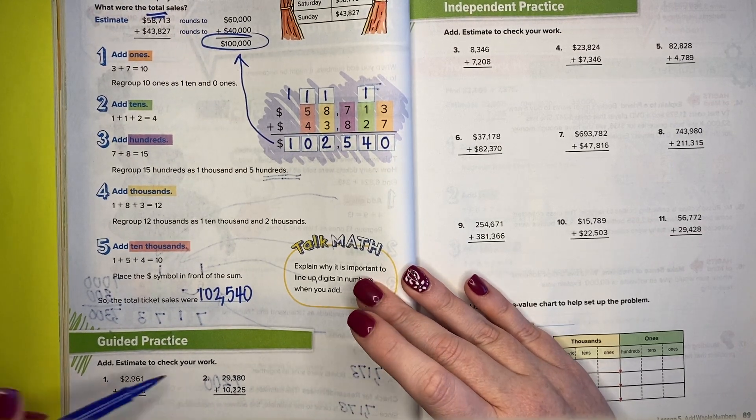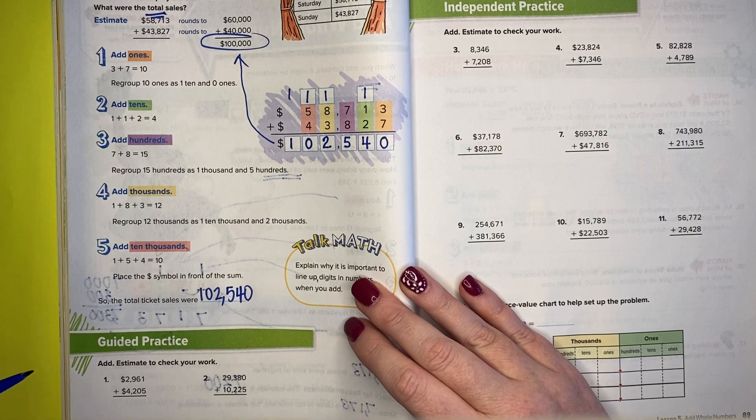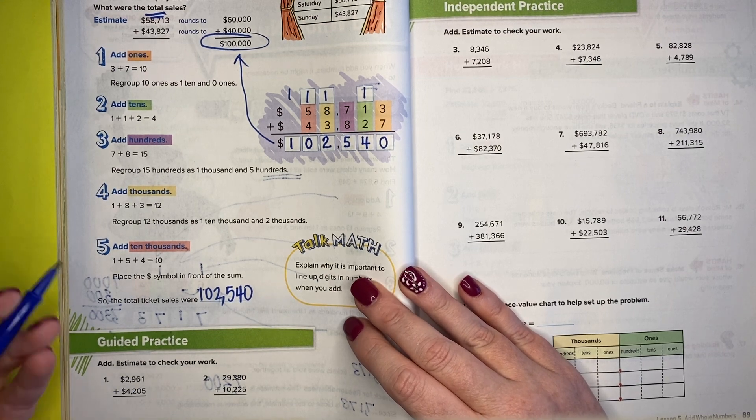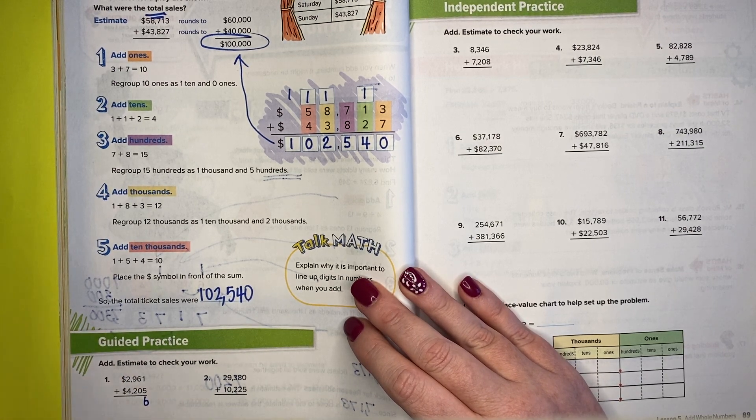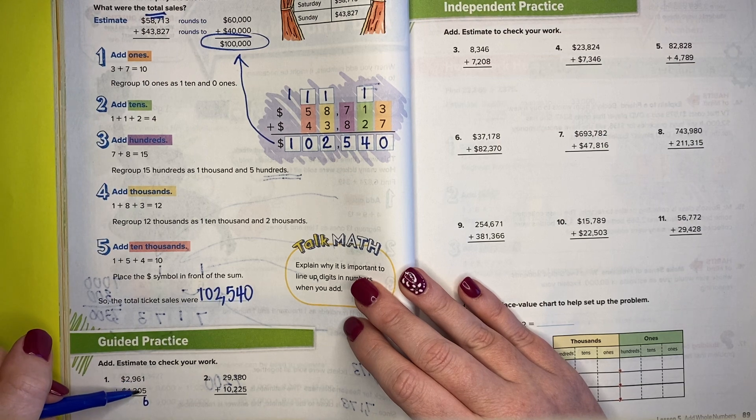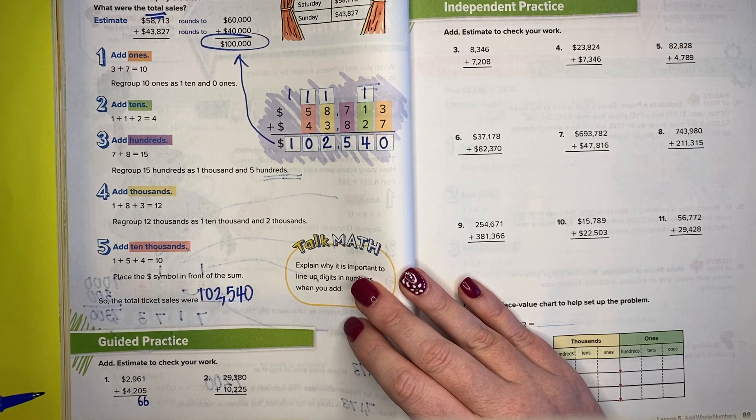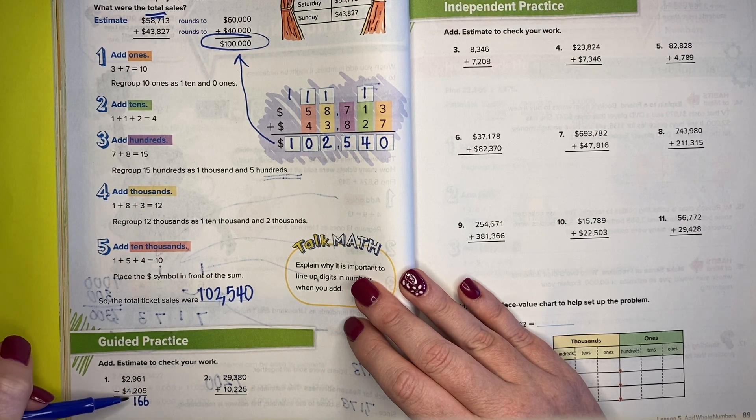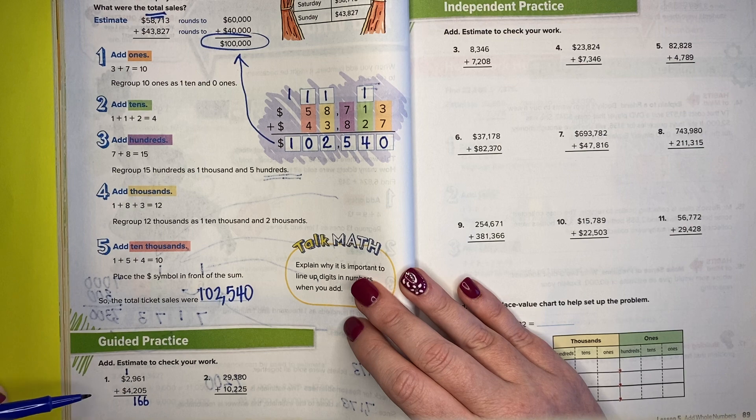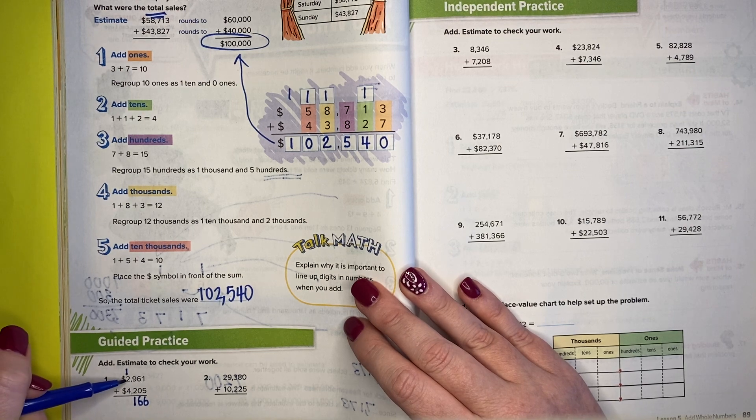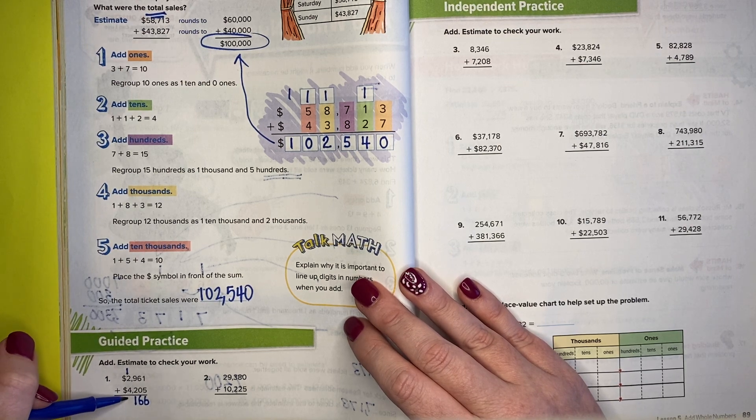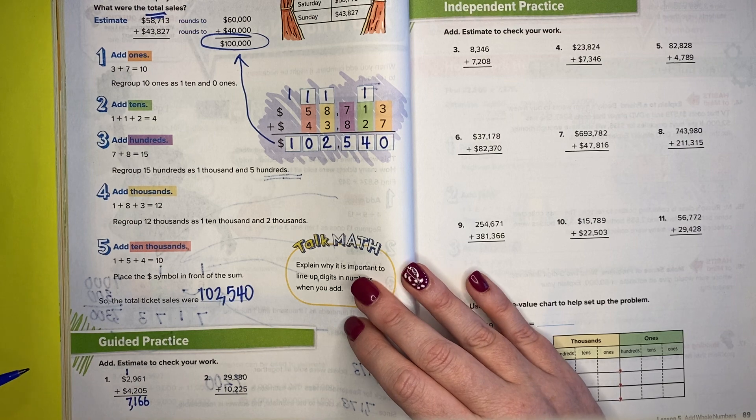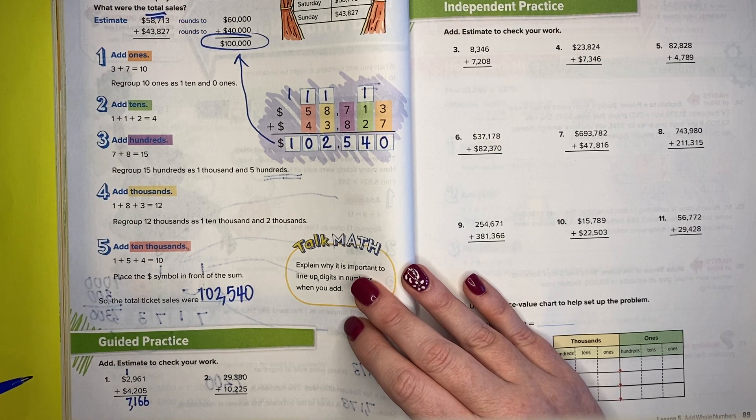So now I'm just going to add these two problems up, and we'll just go through those together. 1 plus 5 is 6, there is nothing to regroup. 6 plus 0 is 6, there's nothing to regroup. 9 plus 2 is 11, so I put the 1 from the ones place down here and the 1 from the tens place up here. 1 plus 2 is 3. So 2,961 plus 4,205 is 7,166.